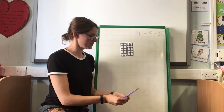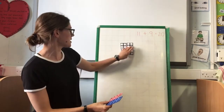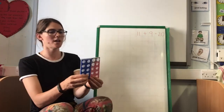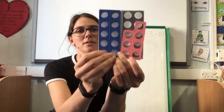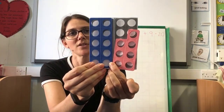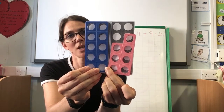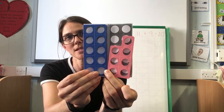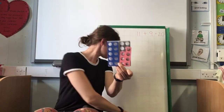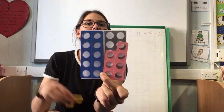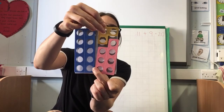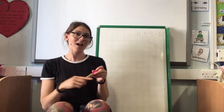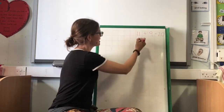What if we had 17 on our 20 frame? Can you see what's missing? What would go in that empty space? 3. 17 add 3 equals 20.